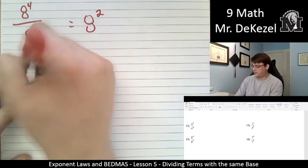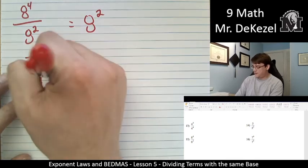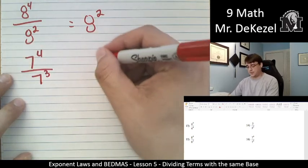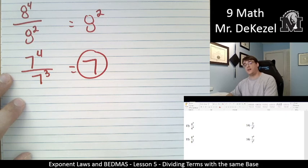And the last one, 7 to the power of 4 over 7 to the power of 3. 4 minus 3 is 1. So we just have 7. All right. Just 7 for our answer.